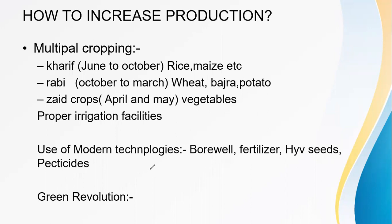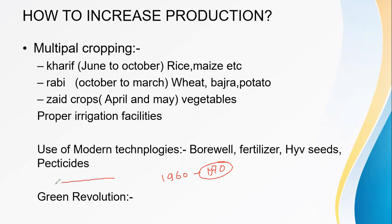Today we are going to talk about what happened during the time of 1960 and 1970. In India, the production of crops increased substantially — in a very high amount. What was the reason? This sudden increase in the production of crops is called the Green Revolution. So let's understand about this Green Revolution.